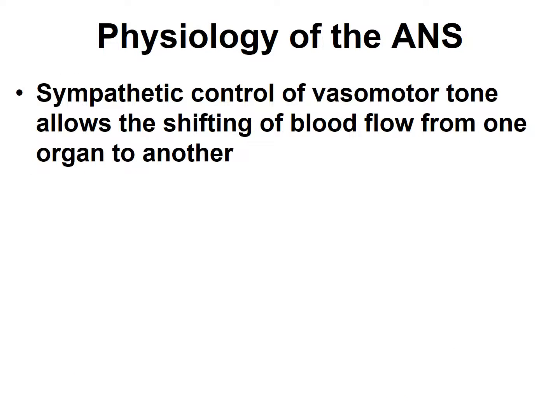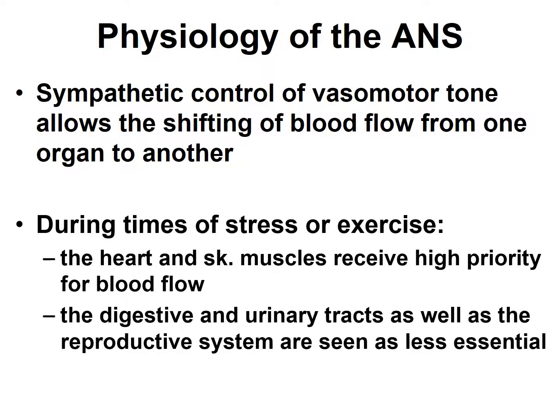This discussion about how the sympathetic nervous system controls the size of blood vessels and therefore the flow of blood through the body reinforces the notion of how the sympathetic and parasympathetic nervous systems work by ensuring that blood flows preferentially to organs depending on the body's needs at a given time. For example, during times of stress or exercise with elevated activity, high priority for blood flow is given to skeletal muscles. Organs such as the digestive tract, urinary tract, and reproductive organs are seen as less essential at that time.